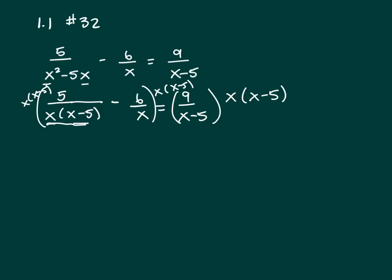When you multiply the first term, the x is cancelled and the x minus 5 is cancelled, and you're left with just a 5. Now when you multiply the LCD by 6 over x, you're left with 6 times x minus 5, because the x's cancelled. And then for the x minus 5 term, you're left with 9x, because when you multiply fractions you can cancel common factors up and down.